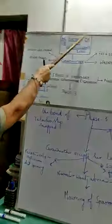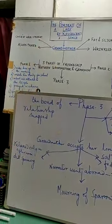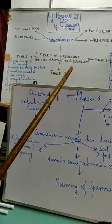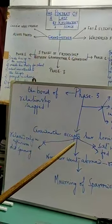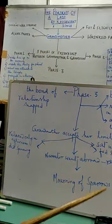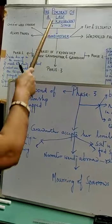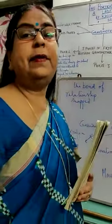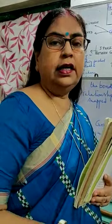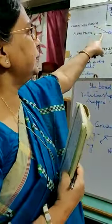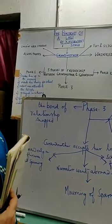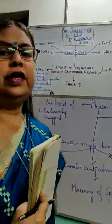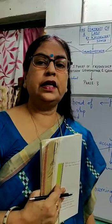Now let's read the chapter, 'The Portrait of a Lady.' Now 'portrait' — see the spelling first: P-O-R-T-R-A-I-T. It has a simple spelling but 99% of students commit a mistake writing it as P-O-T-R-A-I-T. So be very specific about the spelling of 'portrait.' Portrait means a painting, a drawing, a picture. Here, portrait represents the picture of the grandmother of Khushwant Singh, and this short story is a loving tribute of Khushwant Singh to his grandmother.